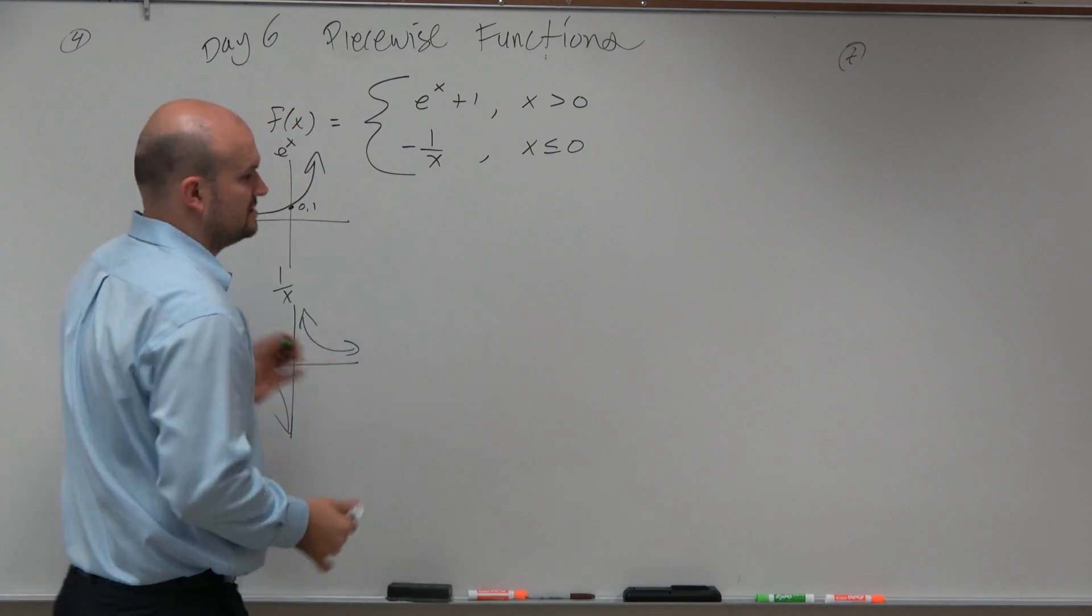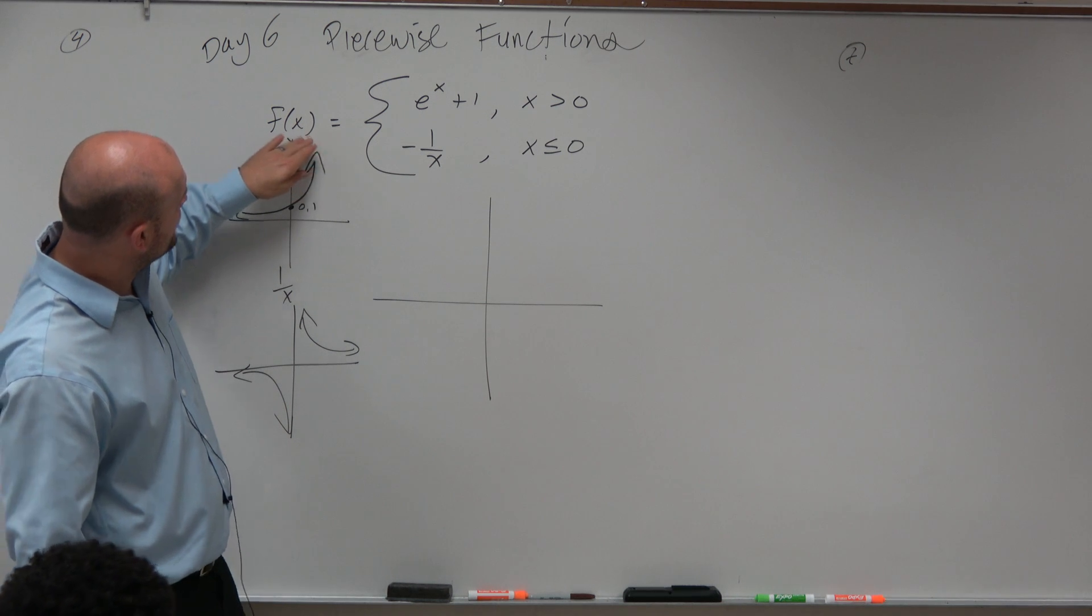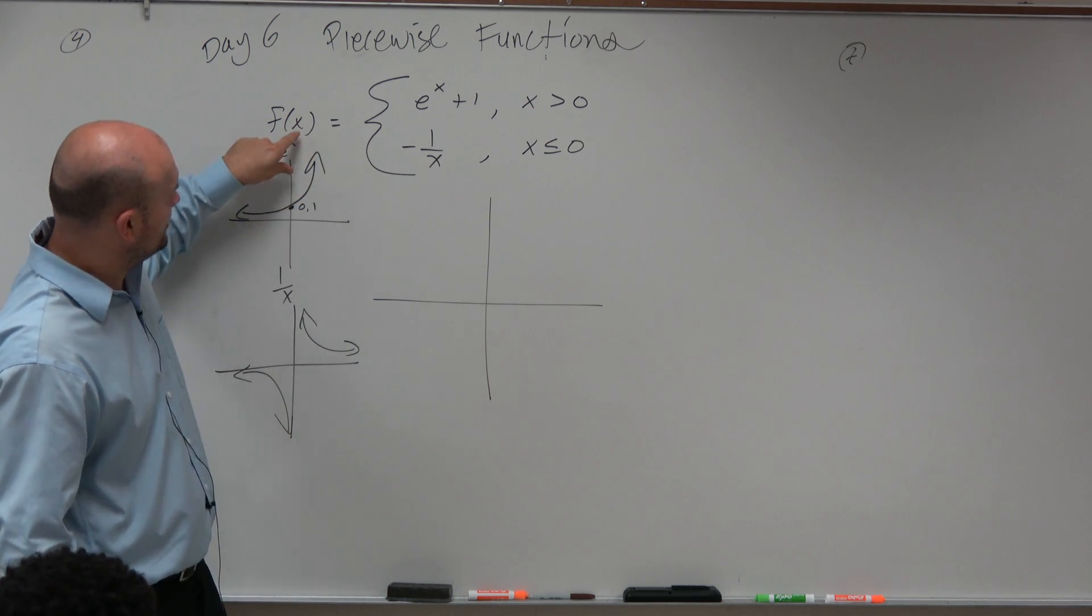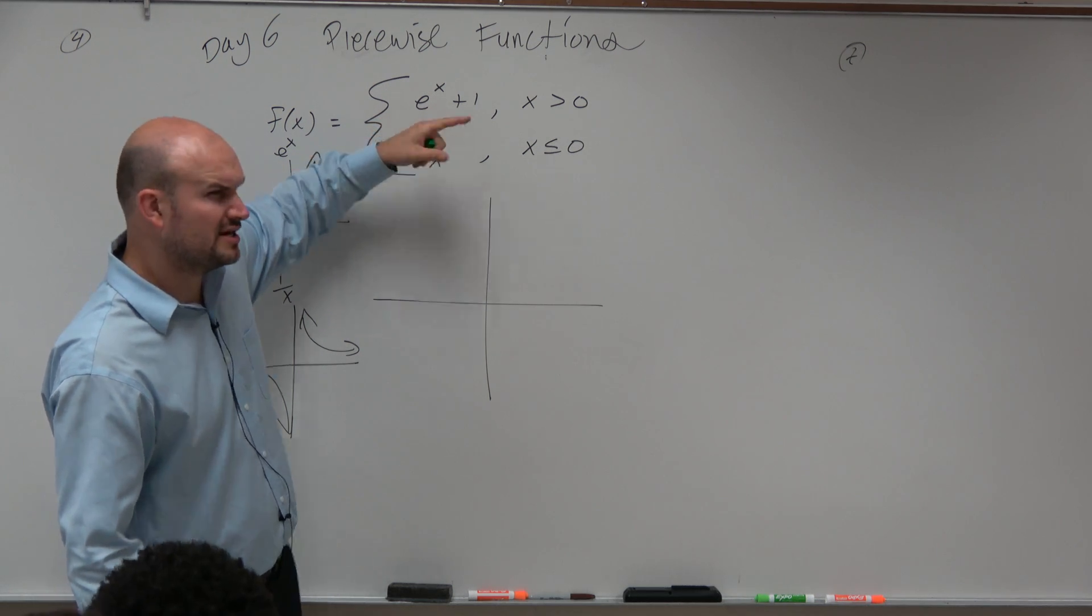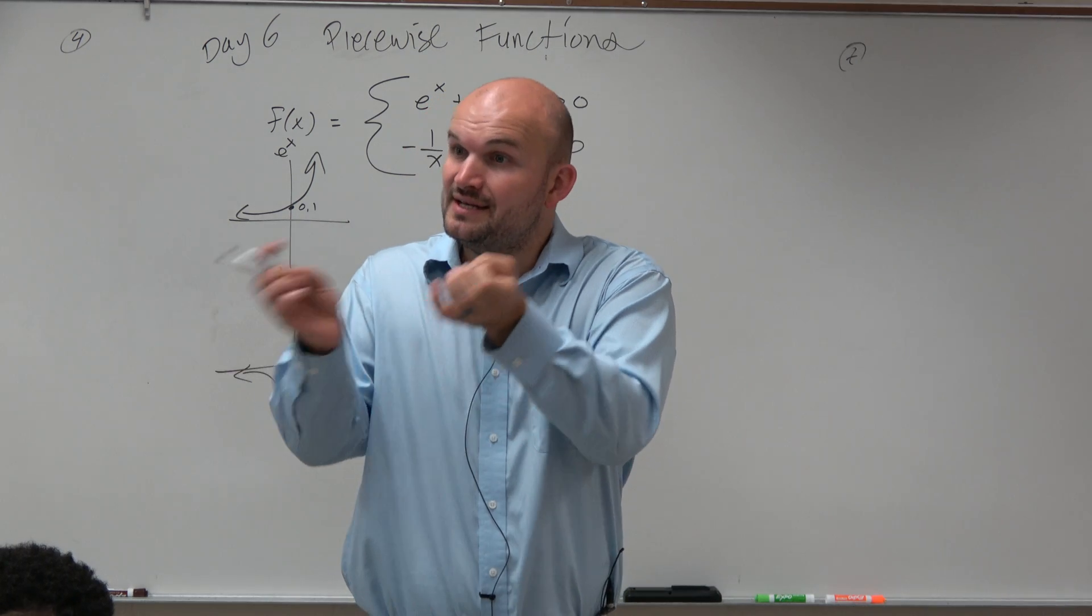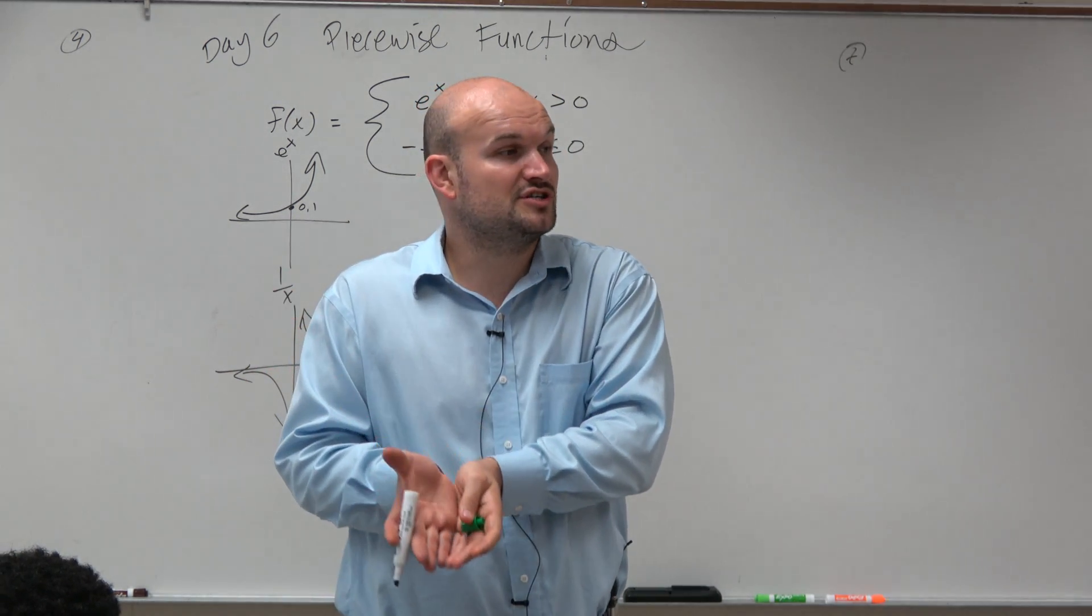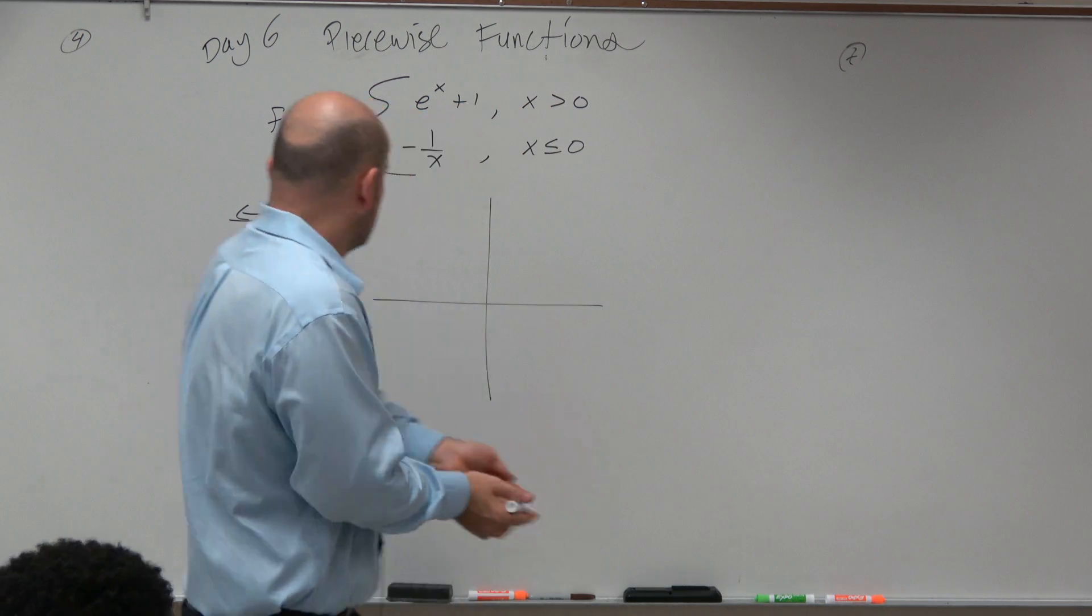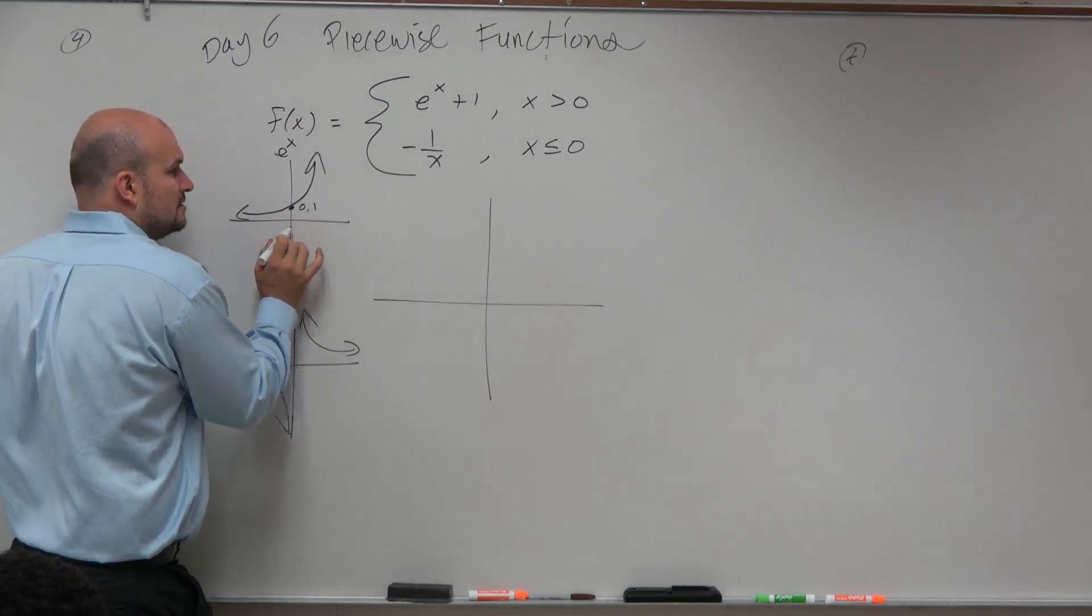So now, if I want to go ahead and graph this, I'm going to graph e to the x plus 1. So I got to think, all right, what is happening? What is that plus 1 doing? Well, is that plus 1 inside the function or outside the function? Outside the function. So therefore, it's shifting the graph up one unit. So if it was originally crossing at 0, 1, now it's crossing at 0, 2.